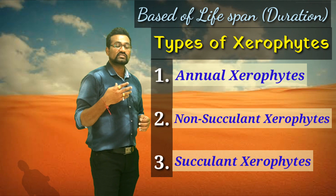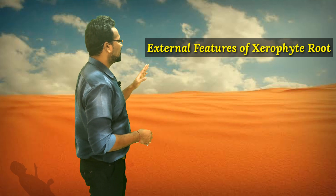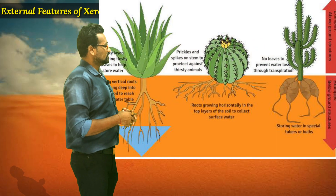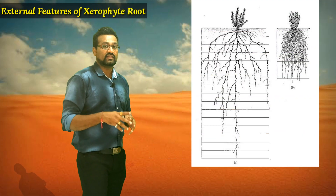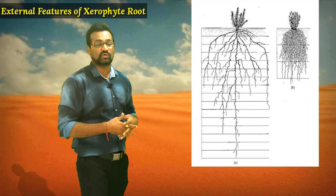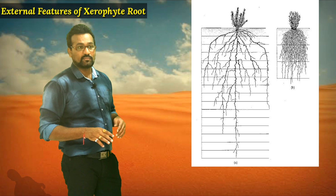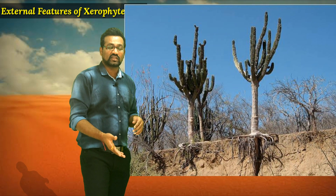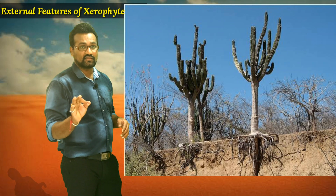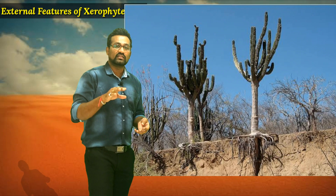Now we will discuss the external morphology with respect to root, stem and leaf, and the anatomy of the root, stem and leaf of xerophytic plants. Regarding the external morphology of the root, these plants show two types of roots based on how deep they penetrate the soil. Generally xerophytic plants do not go very deep, though a few species can penetrate up to five to six feet.